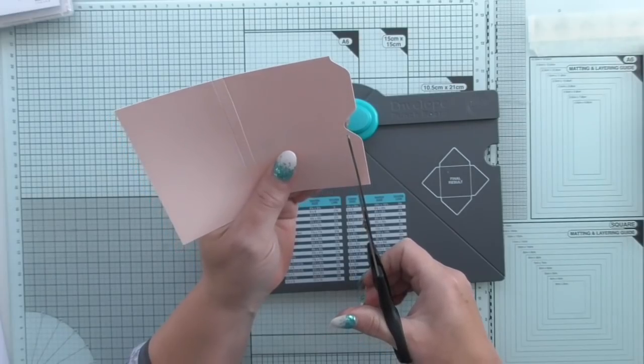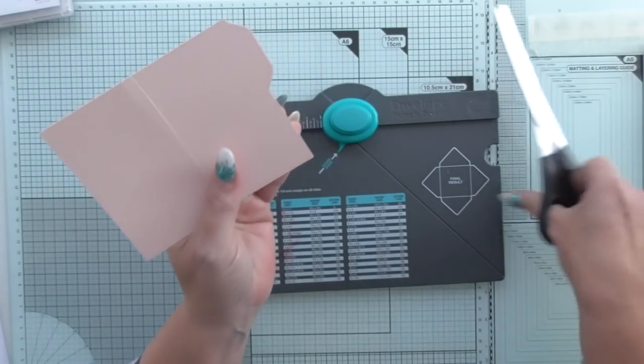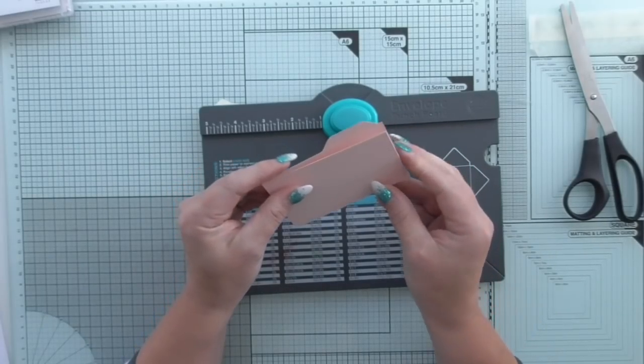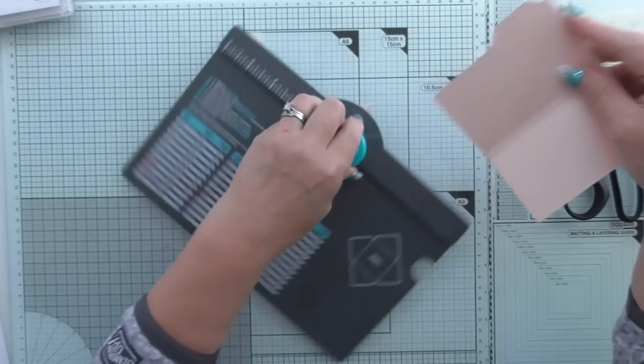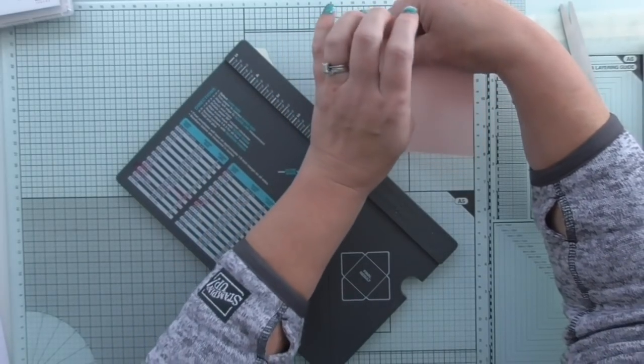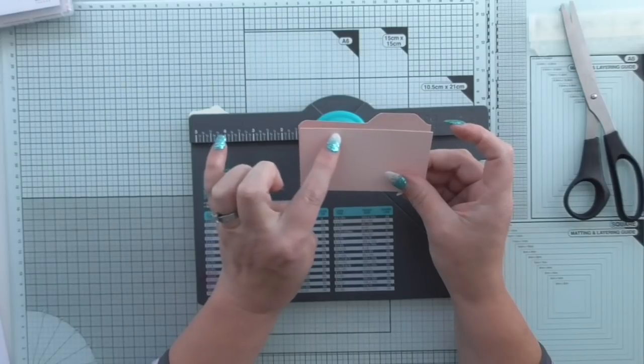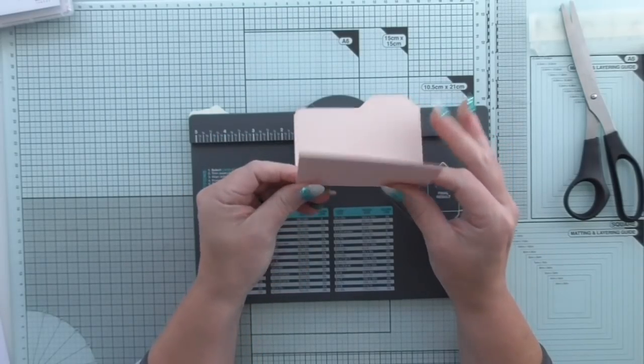So that's the back tab done. I'm going to round my corners. I'm going to round that far corner as well just to make it look a little neater.